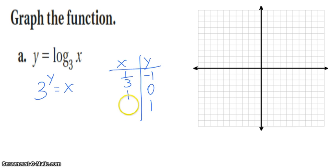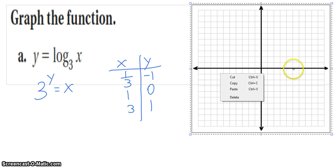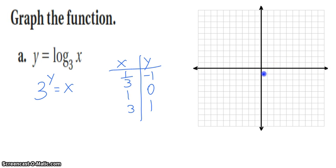Anything to the 0 is 1, and 3 to the first is 3. So at 1 third, so a little past 0, I'm at negative 1. At 1, I'm at 0. And at 3, I'm at 1.